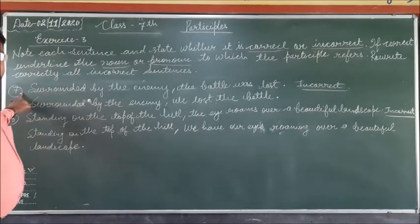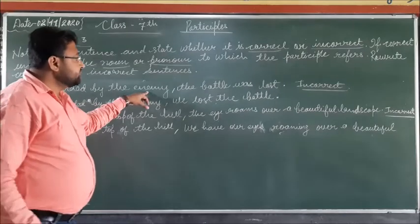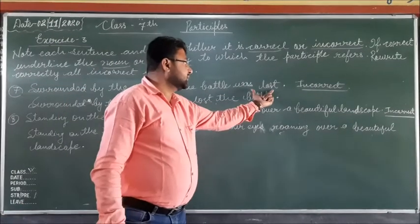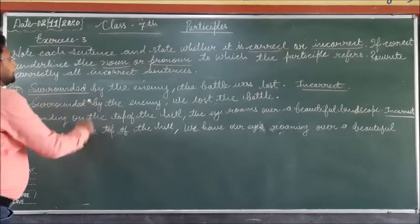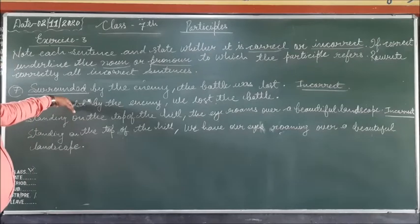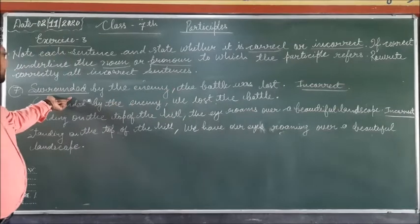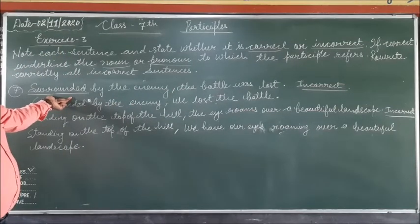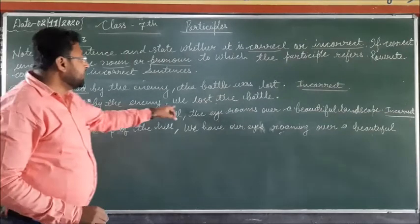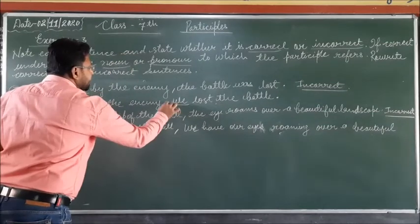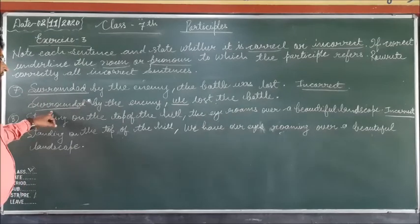Seventh sentence: 'Surrounded by the enemy, the battle was lost.' This is an incorrect sentence because the participle 'surrounded' has no subject to which it refers. The correct sentence will be: 'Surrounded by the enemy, we lost the battle.' Here 'we' is the pronoun to which the participle refers.